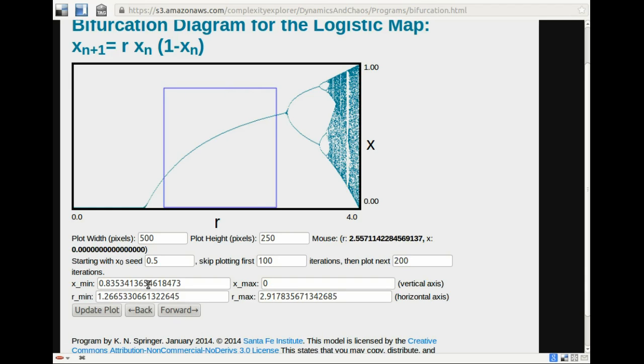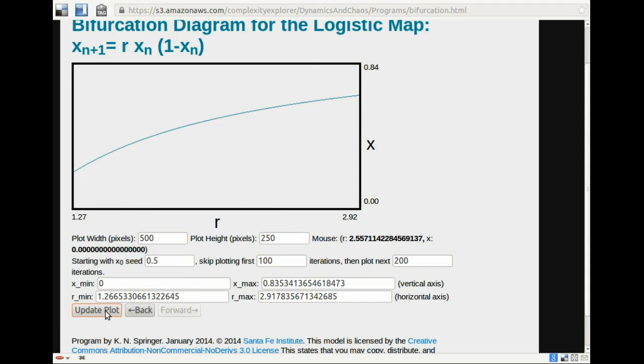So I'll zoom in here. It looks like this region has 1.8 in it. Zoom in a little bit. And now I'm going to move the cursor until the r value is at about 1.8 and then I'll see what the x value is.